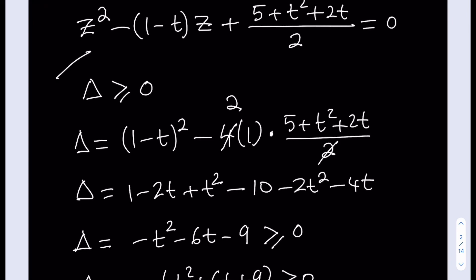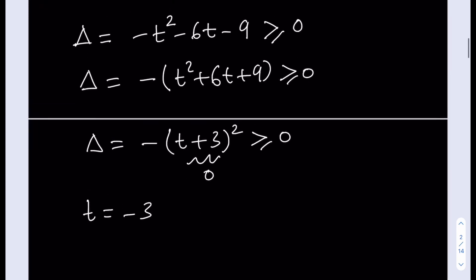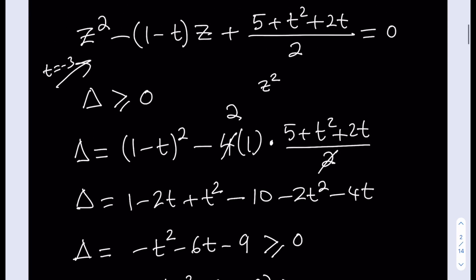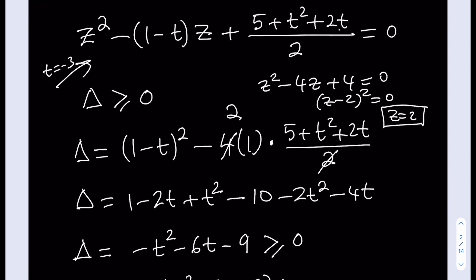Since t equals negative 3 is the only value that works, we plug it into our quadratic. Substituting negative 3: 9 plus 5 is 14, minus 6 is 8, divided by 2 is 4. So the equation becomes z squared minus 4z plus 4 equals 0, which is (z minus 2) squared, giving z equals 2 as the only possible value.